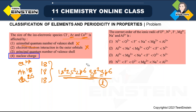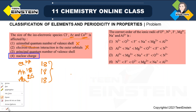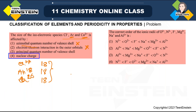The next question is also related to isoelectronic species: find the correct order of ionic radii of O²⁻, N³⁻, F⁻, Mg²⁺, Na⁺, and Al³⁺. When you actually solve the problem you have to check whether they are isoelectronic. In the previous question it was already mentioned in the question, but here, if it is not mentioned and both anions and cations are given together, you must verify — because we cannot compare ionic radii directly between cations and anions unless they are isoelectronic.